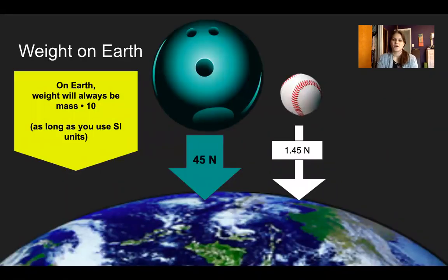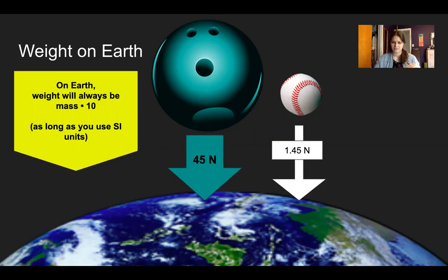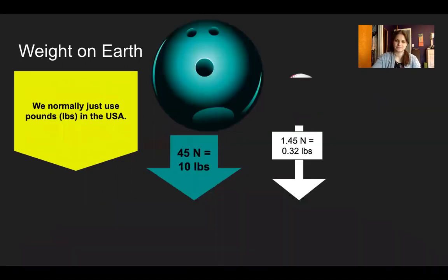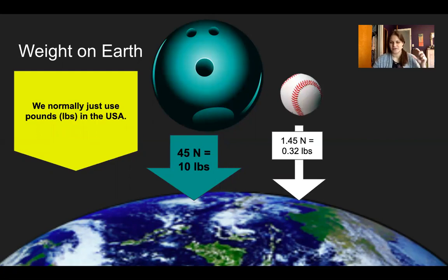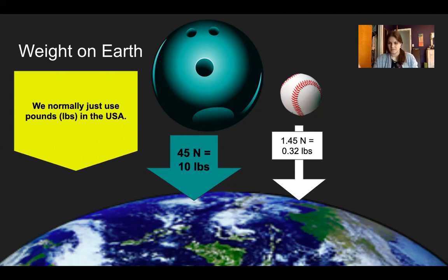The ratio is always the same: take the mass in kilograms, multiply by 10, and you get the weight in Newtons. It's that simple with SI units. For reference in pounds: 45 Newtons is about 10 pounds, and 1.45 Newtons is about 0.32 pounds — helpful since Newtons can feel abstract.